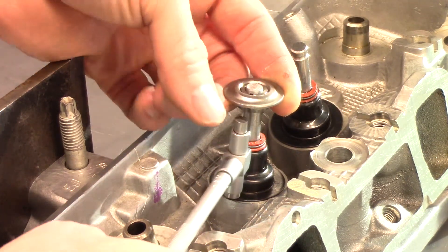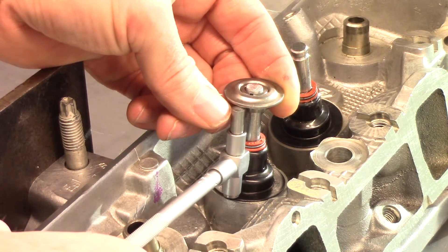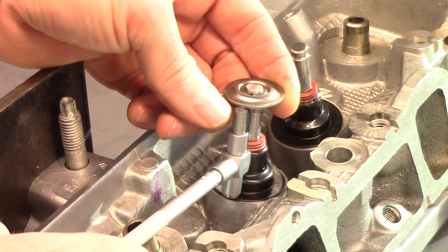In this example, we will use a telescoping gauge. Take a measurement of the distance from the spring seat to the bottom of the valve spring retainer.